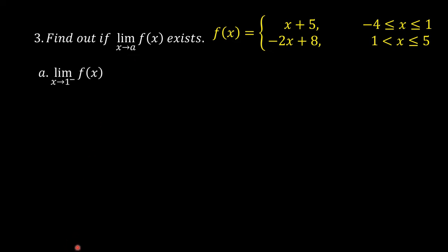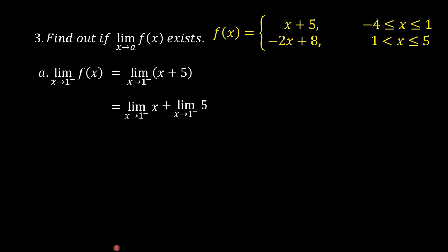The limit of f of x as x approaches 1 from the left equals the limit of x plus 5 as x approaches 1 from the left. This equals the limit of x plus the limit of 5, both as x approaches 1 from the left, which gives 1 plus 5, equal to 6.